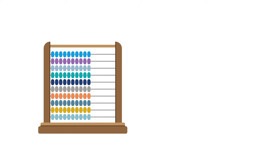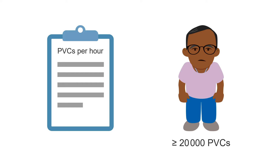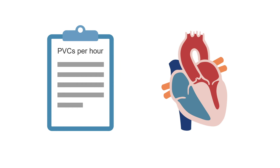You also need to report the number and frequency of PVCs, whether symptomatic or not. I recommend reporting the total number of PVCs during the recording and expressing that value as a percentage of the total heartbeats seen. I also report the average frequency of PVCs per hour. It's recognised that patients with very frequent PVCs — such as 20,000 or more during a 24-hour Holter recording — run a risk of PVC-induced cardiomyopathy. For this reason, you always need to report on overall PVC numbers whether they're symptomatic or not.